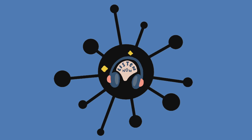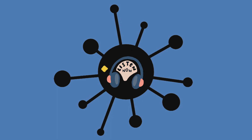People can catch coronavirus from others who have the virus. This happens when an infected person sneezes or coughs, sending tiny droplets into the air. These can land in the nose, mouth or eyes of someone nearby, or be breathed in.